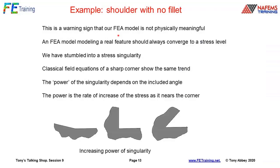It's a warning sign that the FEA model is not physically meaningful. If we've got a real feature in an FEA model, it should always converge to a stress level. It might be a challenge to get convergence with a very small radius, but nevertheless we should get a converged value.